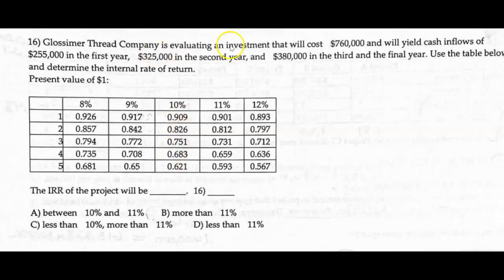So this one has an investment that's going to cost $760,000, so that's our cash outflow, and then we've got inflows of $255,000, $325,000, and $380,000 from year one through three. And here's our table, and they want to know what the IRR of the project would be.